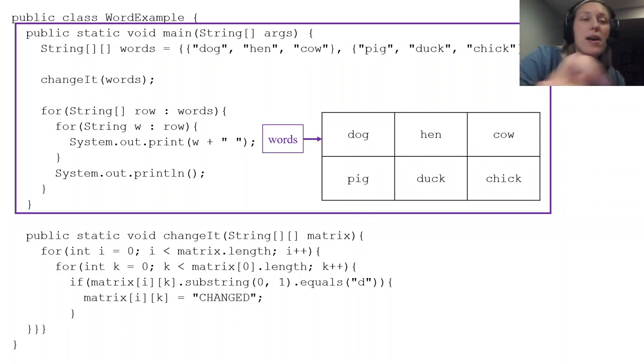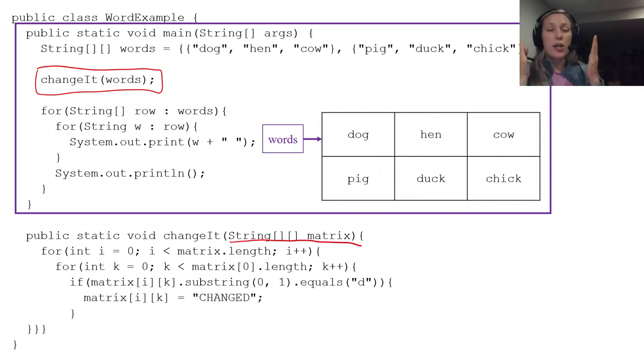So when I have this right here, changeIt(words), I'm passing the reference to the method changeIt. And you can see down here it's ready for it. changeIt is going to accept a two-dimensional array of strings and it's going to call it matrix.